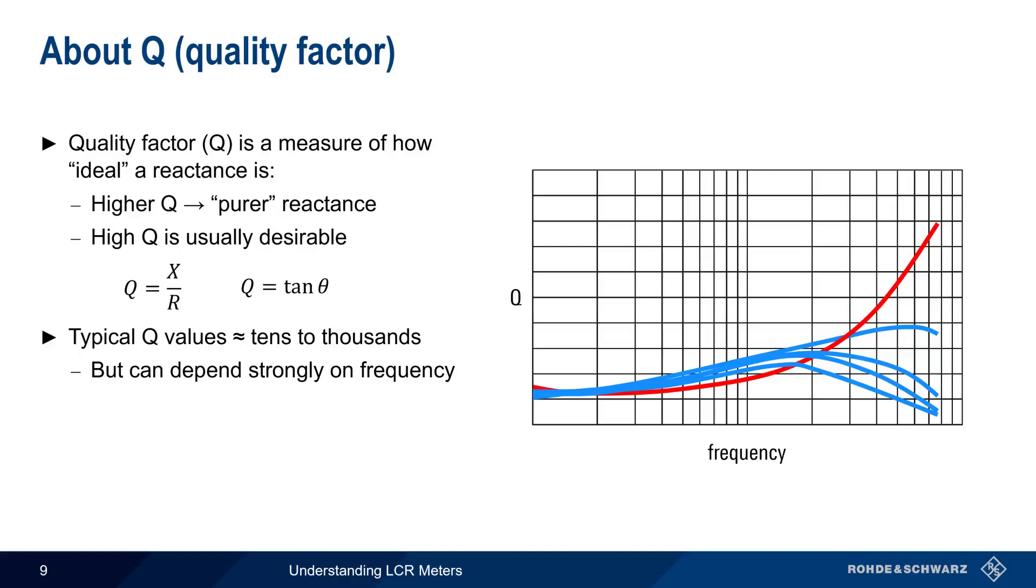In some cases, particularly when measuring capacitance, the dissipation factor D is used instead of the quality factor Q. D is just the reciprocal of Q, or can be computed by taking the tangent of the loss angle delta.